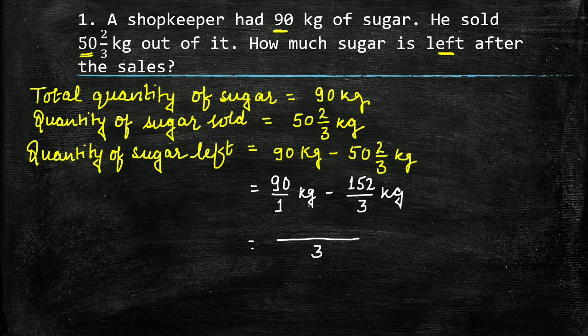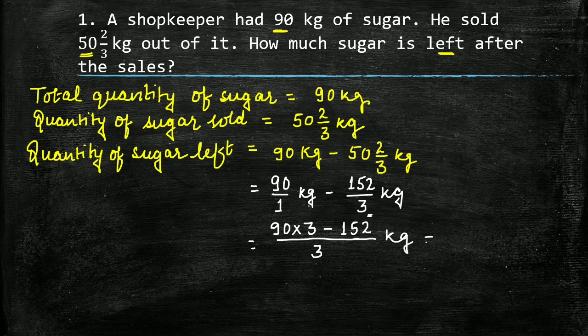LCM of 1 and 3 will be 3, so write 3 as the common denominator. In the first fraction, denominator is 1, so we have to multiply this fraction by 3 — multiply its numerator 90 by 3. In the second fraction, denominator is already 3, so write its numerator as it is, that is 152 kg.